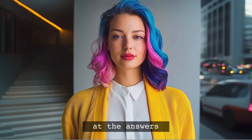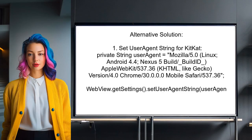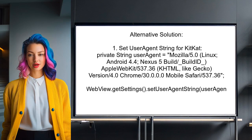Now, let's look at the answers provided by other users. An alternative solution suggests fixing the full screen issue by setting a specific user agent string for KitKat devices. This adjustment resolves the erratic behavior of the OnShow Custom View and OnHide Custom View methods on newer devices.